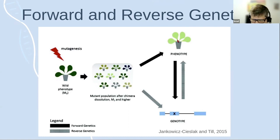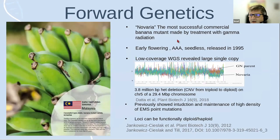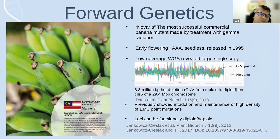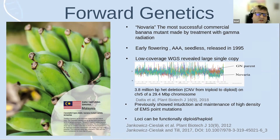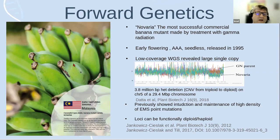As an example of forward genetics — and I know this is a canola meeting, but maybe you had a banana for breakfast — bananas are a nice example of plant mutation breeding. Bananas are sterile and parthenocarpic: seedless with a very narrow genetic base. So inducing mutations can create a lot of new genetic diversity for the breeder. The most successful banana variety is called Novaria, released in Malaysia in the 1990s. It's early flowering, allowing it to escape disease and tropical storm damage.